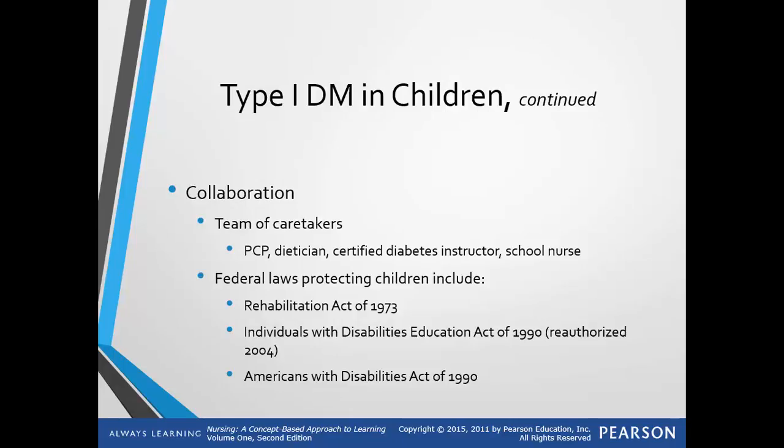There are federal laws that protect children. This includes the Rehabilitation Act of 1973, the Individuals with Disabilities Education Act of 1990, reauthorized in 2004, and the Americans with Disabilities Act of 1990. Children must be allowed to participate in sports and extracurricular activities that are available at schools and daycares.